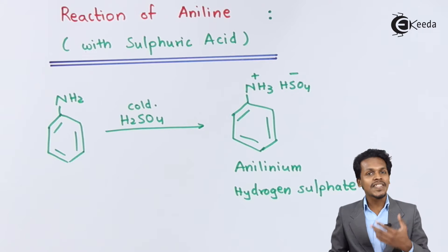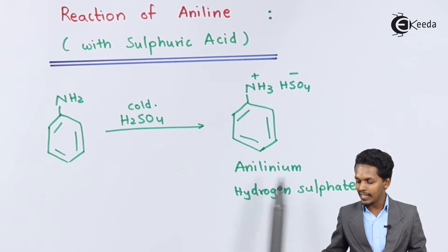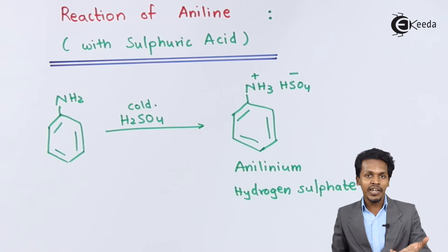This conversion is basically a two-step process. We have to convert this aniline first into anilineum hydrogen sulfate, and after treating it with sulfuric acid we can obtain a product. What is the product? Let me discuss that also.